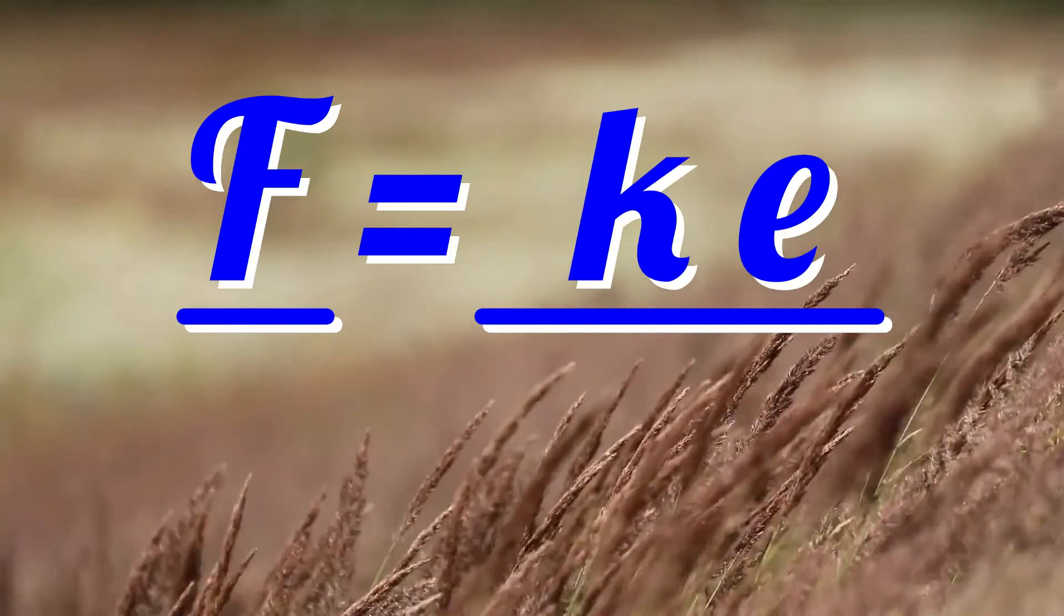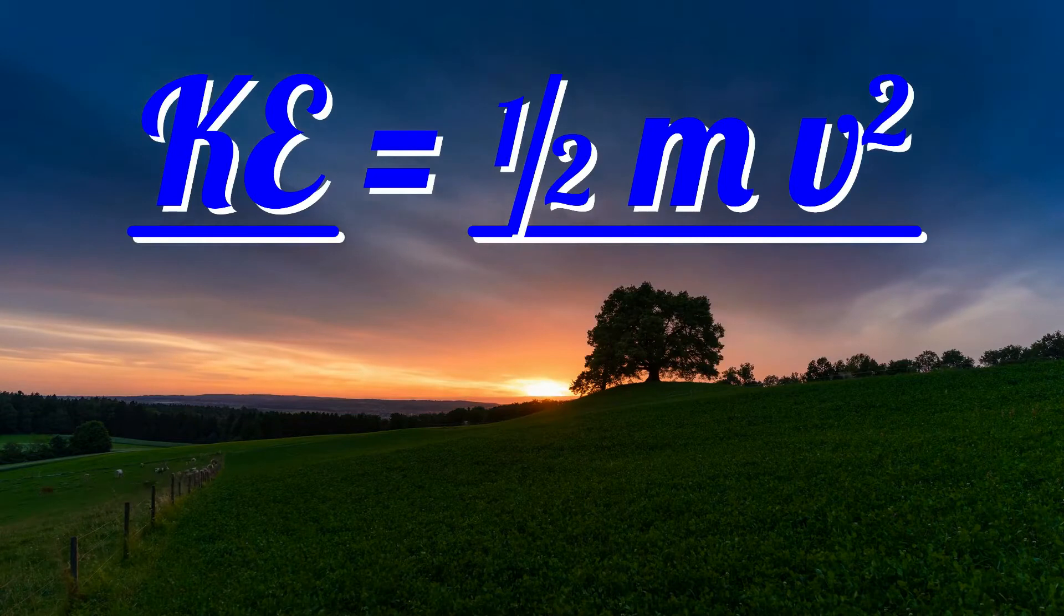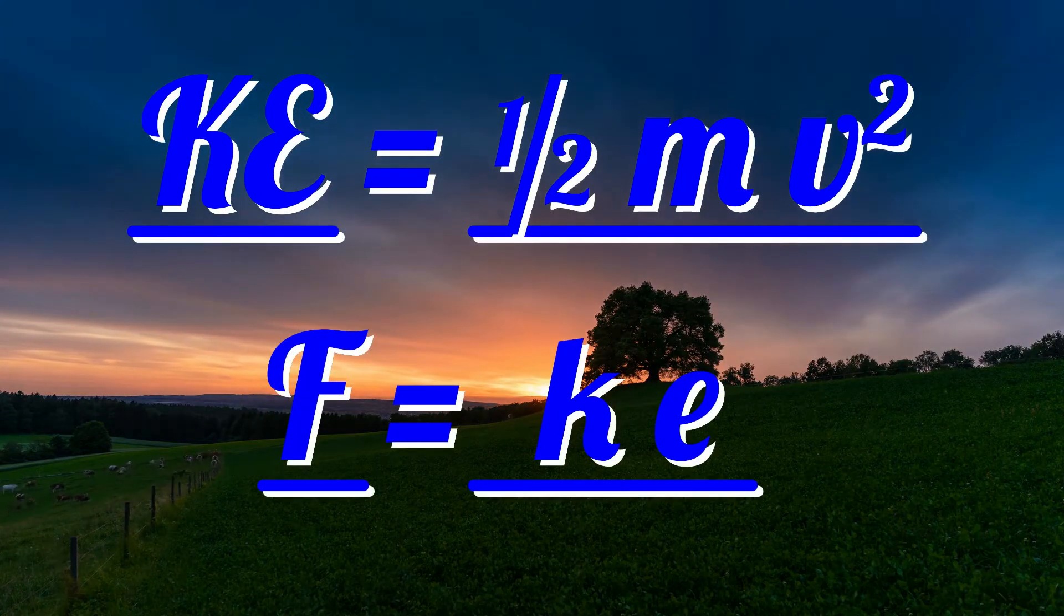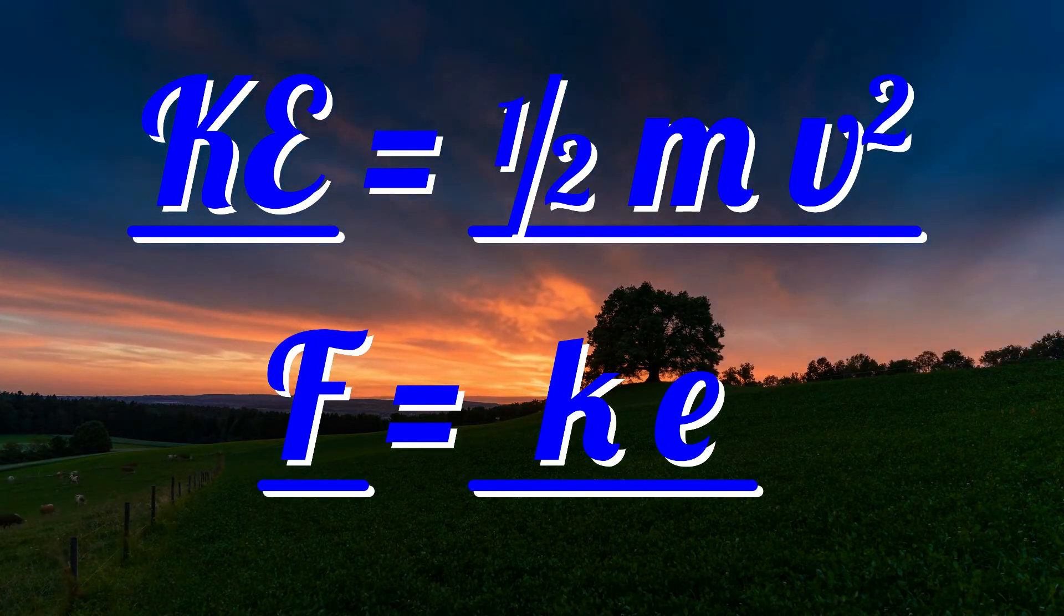This lesson's equations were KE equals half mv squared and F equals ke. Please rewatch this video as many times as you need to make sure you succeed in your physics GCSE and IGCSE.